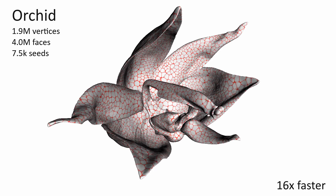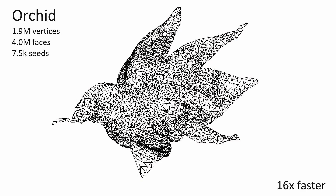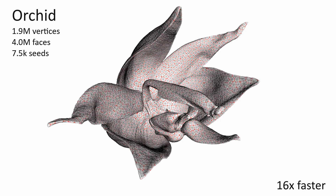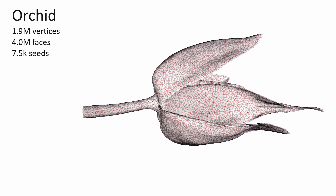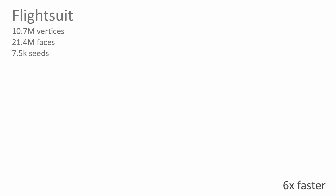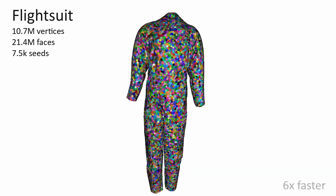Models with spiky features, such as the Smithsonian scan of an orchid, can be handled correctly and efficiently with our layered fields approach. The moderate memory cost of our approach allows very large models, which challenge the state of the art, to be processed efficiently on the GPU.